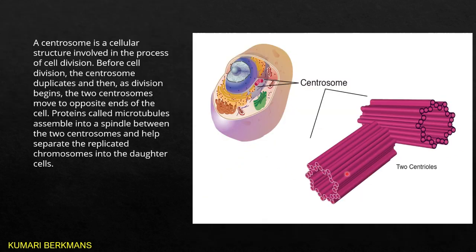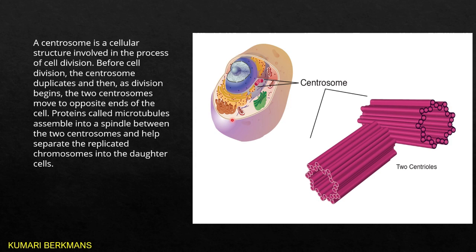This organelle is called the centrosome, which is present near the nucleus. At the time of cell division, the centrosome divides into two centrioles made of microtubules. These centrioles move towards the opposite poles of the cell. The chromatin fiber condenses and forms chromosomes, which arrange at the center of the cell. The centrioles produce spindle fibers which attach to the centromere, and when they contract, the sister chromatids are pulled towards the opposite poles, forming daughter cells. The centrosome is very important at the time of cell division.